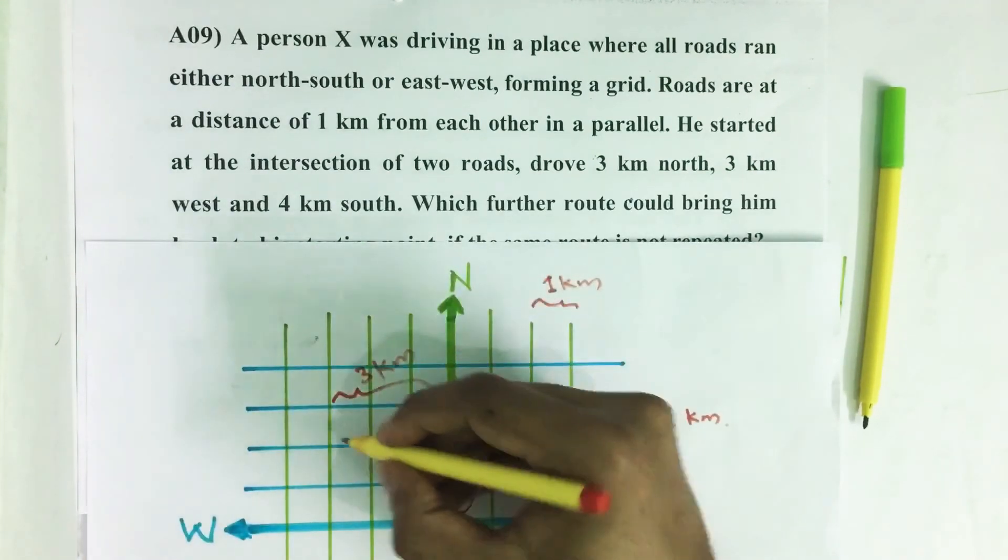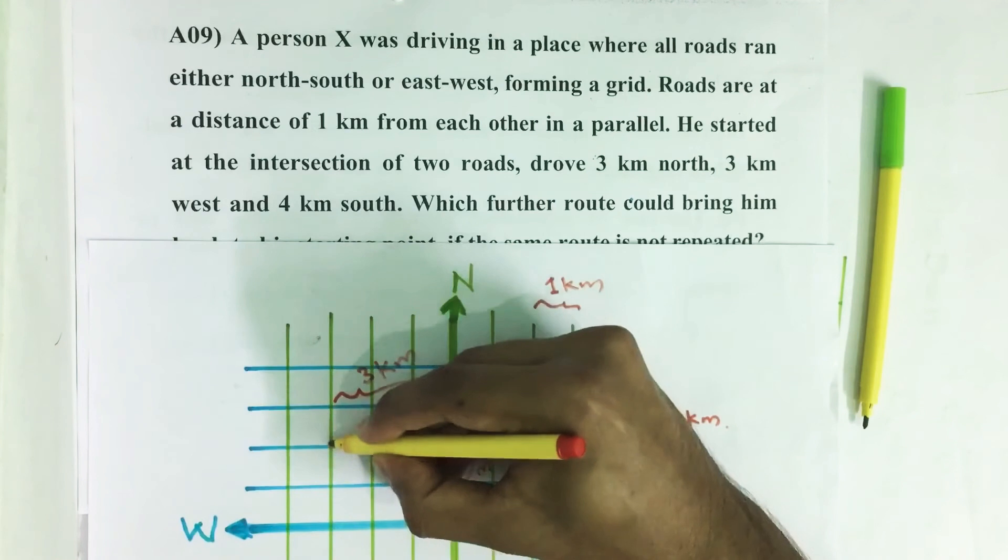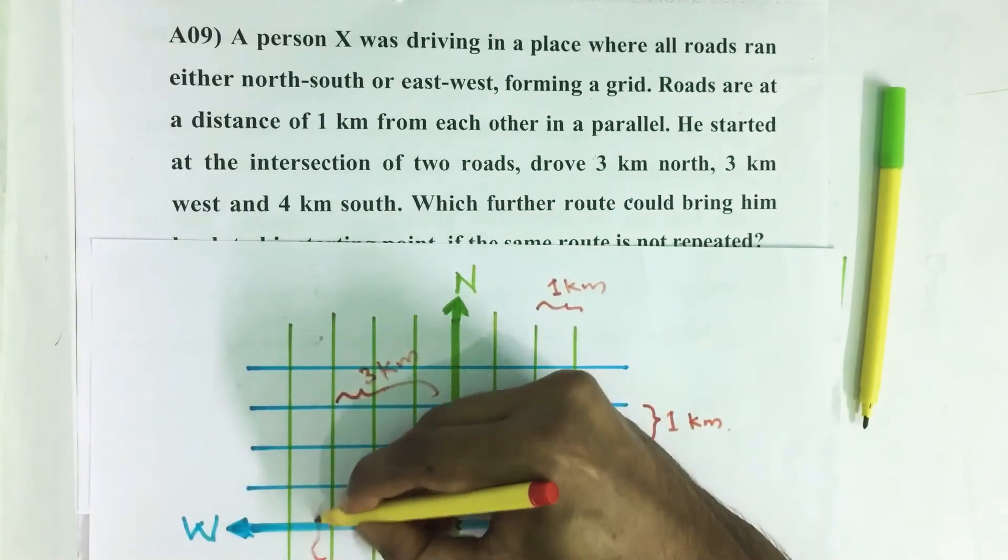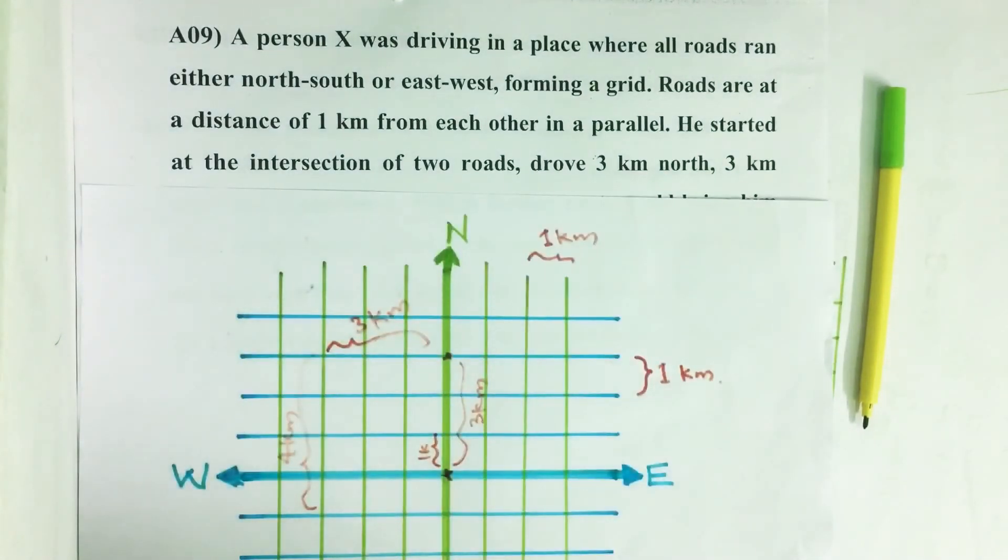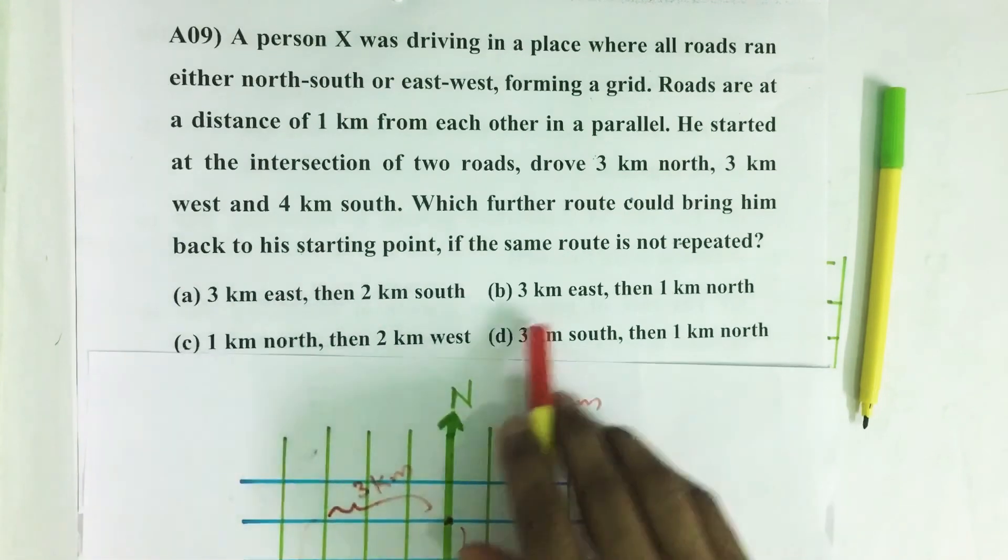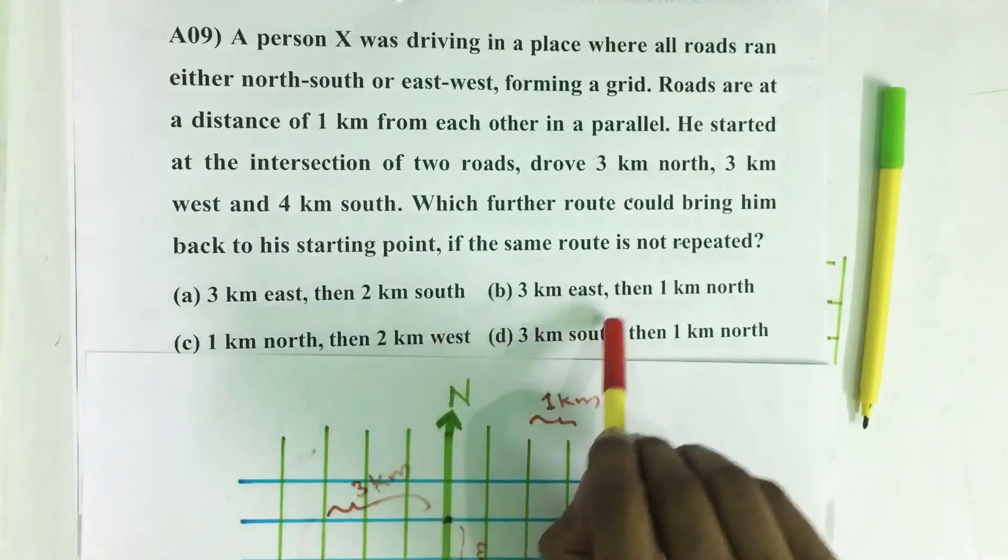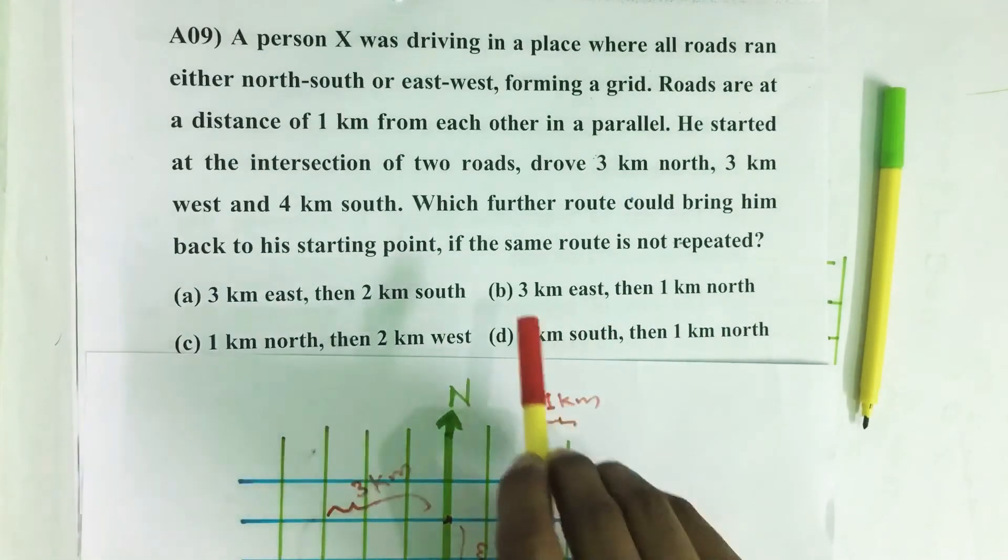Then 4 kilometers south - one, two, three, four - 4 kilometers south. To reach back his starting point, which route does he have to select? One condition: